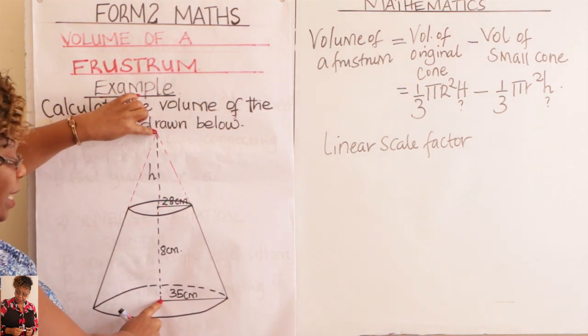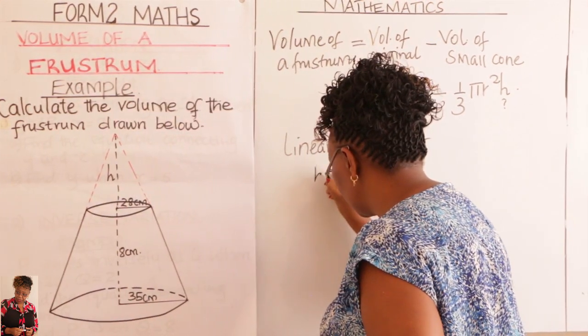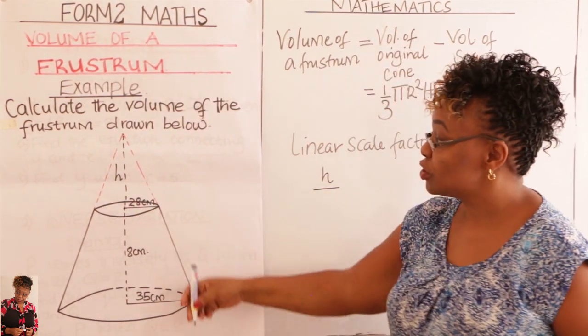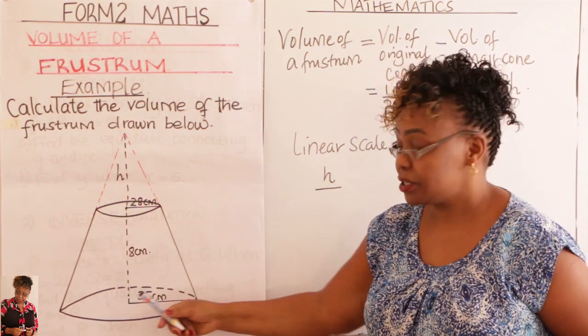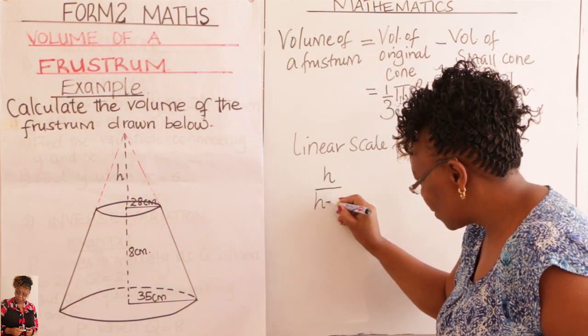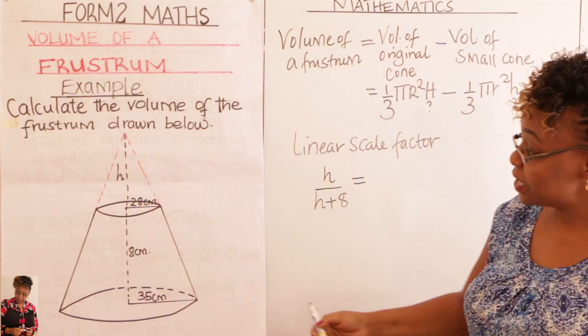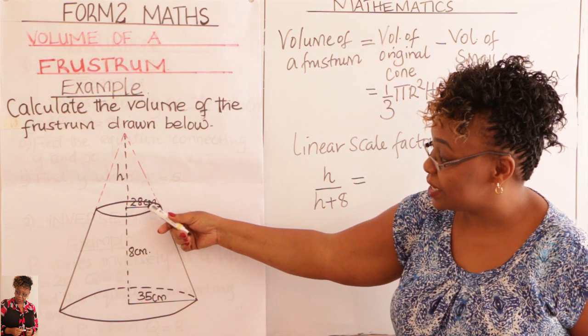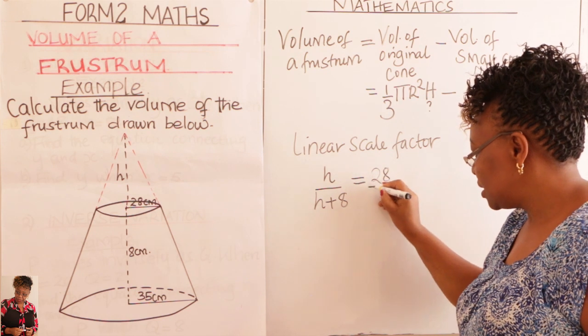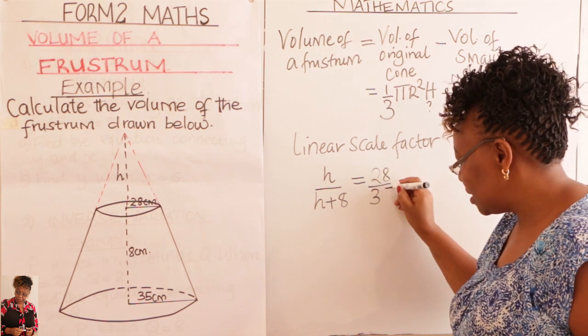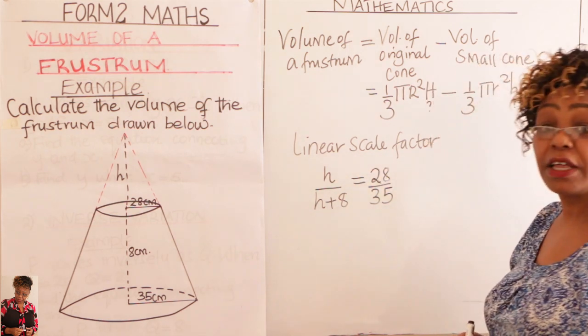So using linear scale factor we talk of small h. Small height over capital H. This is your capital H from here to here. So we talk of small h over capital H which is h plus 8. H plus 8. H equals to what? Which are the two corresponding sides? The radii. 28 over 35.